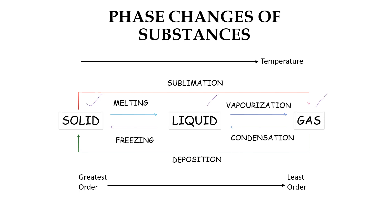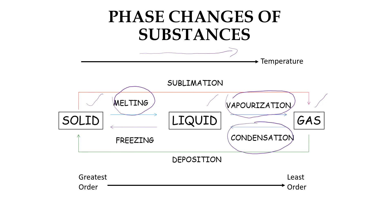As we increase the temperature to a certain value, we see the transformation of solid to liquid through a melting process. Then the liquid will undergo vaporization and turn into gas. The gas can be condensed back to liquid, and the liquid can be frozen to solid.